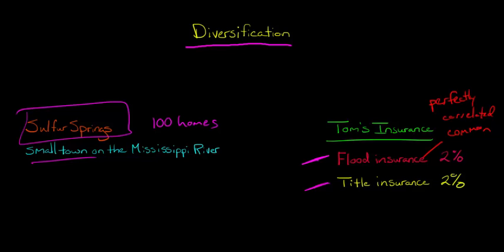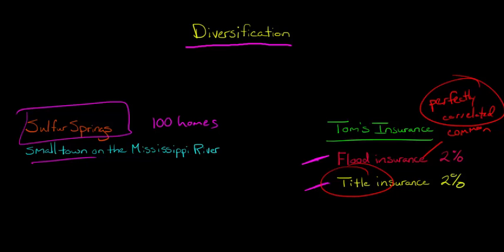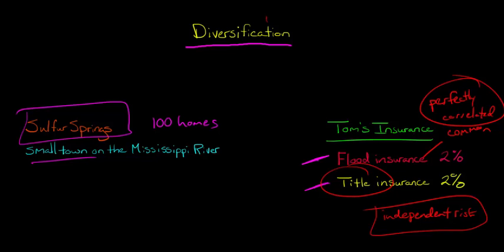Because you all live in a tight little corner of town, right up against the river, if the Mississippi River floods, all 100 homes are probably going to be flooded. So it's a common risk — perfectly correlated. If there's one payout the insurance company has to make due to this flood, it probably has to pay out all 100 homes. Title insurance is different — it's an independent risk, not correlated with other losses. If you have some kind of problem with the title to your home, that probably has nothing to do with the other 99 homes. It's something unique to your home.